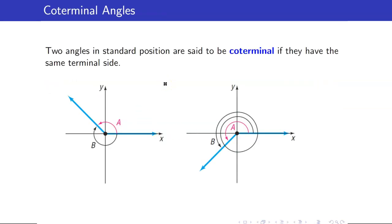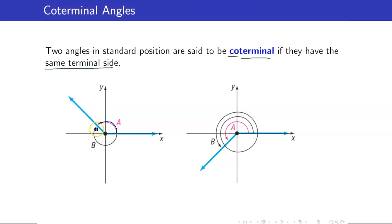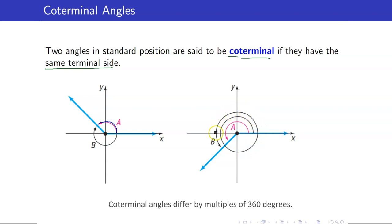Another important concept is coterminal angles. Two angles in standard position are coterminal if they have the same terminal side — 'co' meaning same terminal side. A positive and a negative angle can be coterminal if they share the same terminal side. Similarly, an angle and that angle plus one full revolution are coterminal.